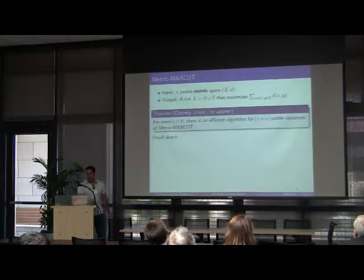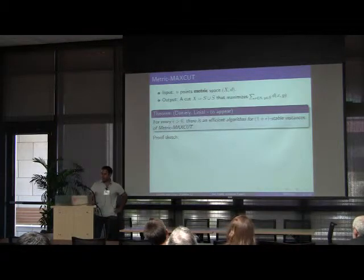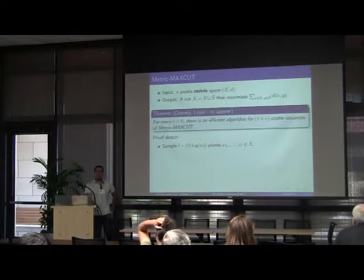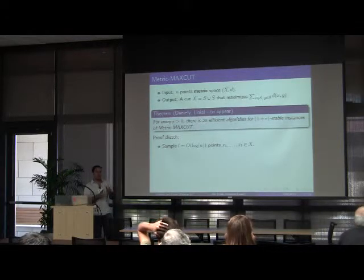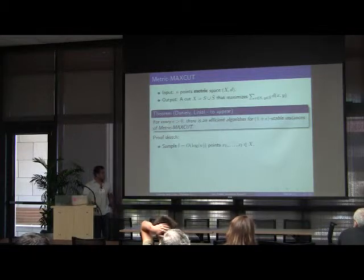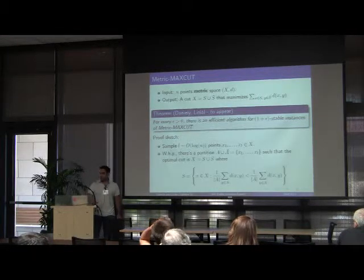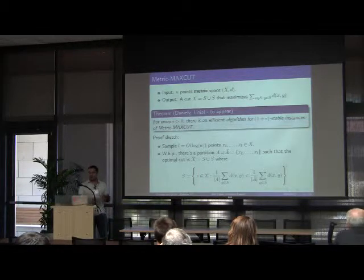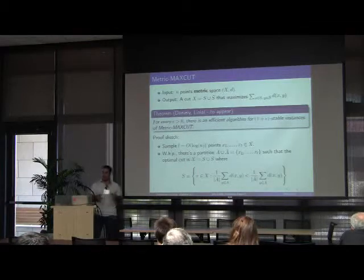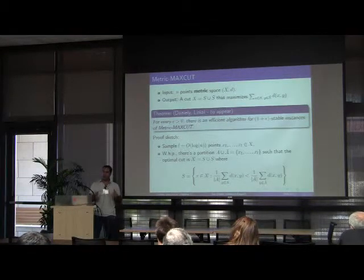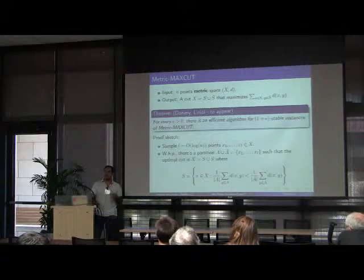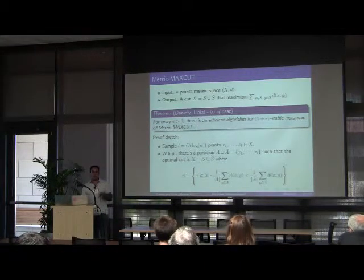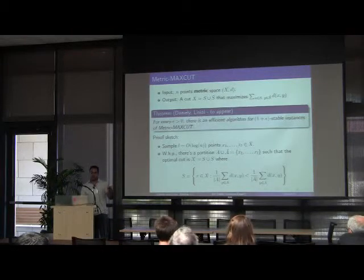I'll describe its proof which is rather simple. We start by sampling log n points, x1 to xl, according to some distribution, not the uniform distribution. And then we show that with high probability there is a partition of the sample points into two sets A and its complement that induces the optimal cut. Where the cut induced by the partition A and its complement is the following cut. On one side we put all the points that are on average closer to A.